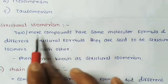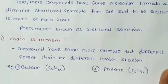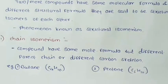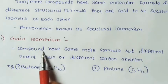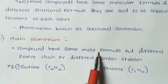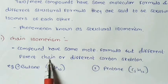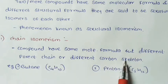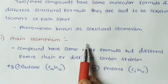First, let us see chain isomerism. Organic compounds that have the same molecular formula but a different parent chain or different carbon skeleton are said to exhibit chain isomerism.